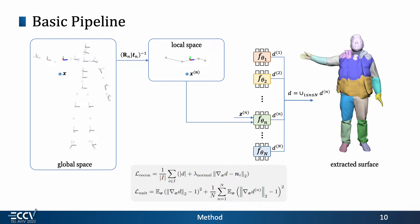Given the point X in the global space, we transform it into the local space of each bone. In each local space, we learn a Neuroimplicit Function to model the SDF of a part.